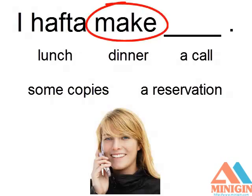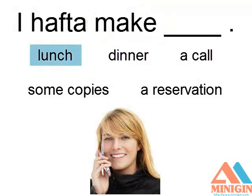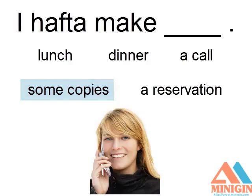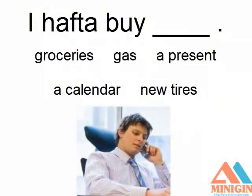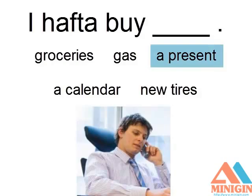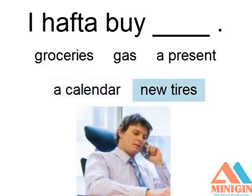We could make a new branch by adding "make": I have to make lunch. I have to make dinner. I have to make a call. I have to make some copies. I have to make a reservation. We could add "buy": I have to buy groceries. I have to buy gas. I have to buy a present. I have to buy a calendar. I have to buy new tires.